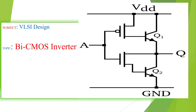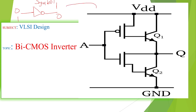I am going to explain about the BiCMOS inverter. We know that the inverter function: when you are giving 0, it gives the 1 output, and when you are giving 1 input, it gives the 0 output. This is only the symbol. If you want to design the internal circuit, it requires transistors.